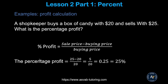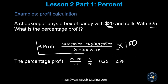Now let's learn how to calculate profit. The formula for percent of profit is: (selling price minus buying price) divided by buying price, times 100. For example, if the buying price is $20 and the selling price is $25: (25 minus 20) over 20 equals 5 over 20, simplify to 1 over 4, which equals 0.25. Move two decimal places to convert to percent: 25% profit.